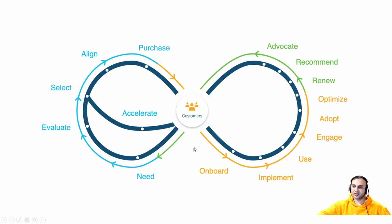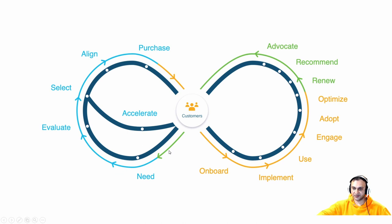In this slide you can see the complete lifecycle journey of any product being purchased by a customer. Initially the customer goes through the left side of the cycle — their initial needs — they evaluate those needs, select appropriate products, align those products, and eventually purchase the product.